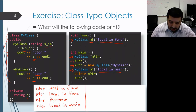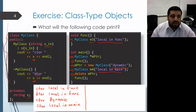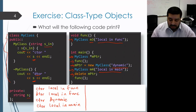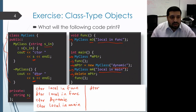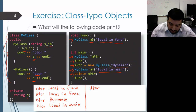On the next line, we invoke the delete operator on m_pointer. What that does is follow the pointer to the object it's pointing at and invoke the destructor if it's a class type. In this case, the destructor of that MyClass object is invoked, and so that prints out DTOR and then the string that was passed when creating it, which was "dynamic".